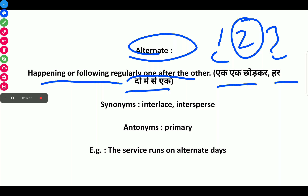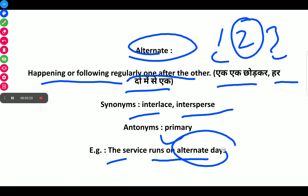Synonyms of Alternate are interlaced and interspersed. Antonyms are primary. Example: The service runs on alternate days — like Monday, then not Tuesday, but Wednesday.